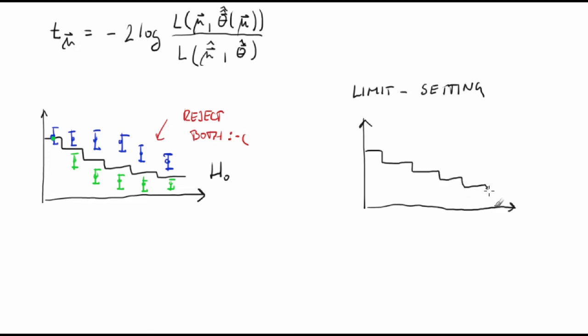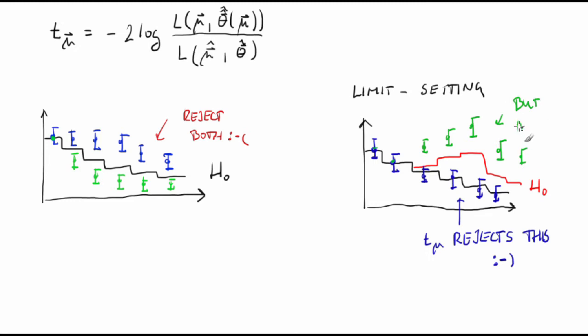An obvious remark. When setting limits, the null hypothesis H0 that we test is the new theory, and all its free parameters are fixed to some values. The alternative hypothesis predicts just background. Definitely, we don't want to exclude a theory if we observe an excess of events over the background-only expectation.